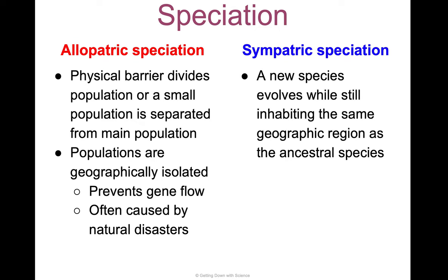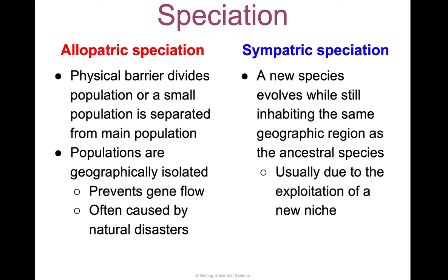Sympatric speciation is when a new species evolves while still inhabiting the same geographic region as the ancestral species. It's usually due to an exploitation of a new niche — a particular species is needed to perform a particular job in the ecosystem, so the genetics and adaptations of some individuals break off to allow them to fill that niche while the rest remain behind.